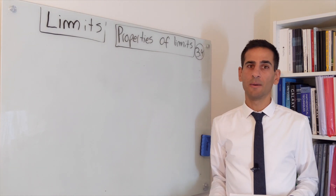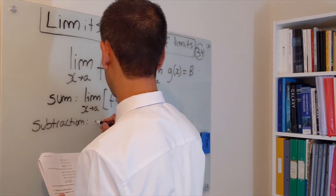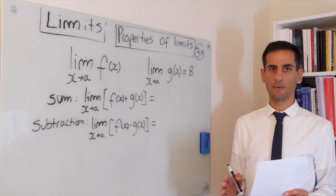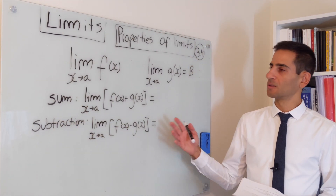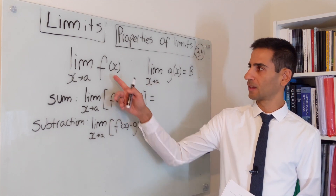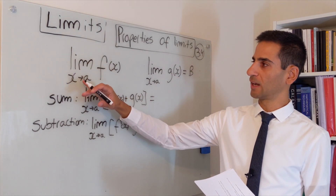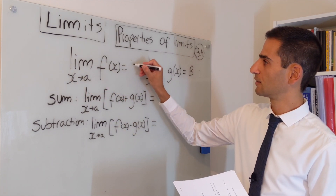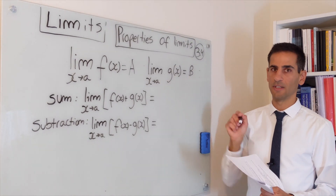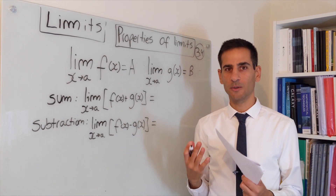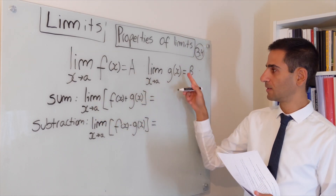You may already be using derivatives but didn't know their properties come from limits. Let's have a look. Let's start with two simple properties of limits: the sum and the subtraction properties. Just like in the lecture notes, we have a function f(x) and another one g(x), and we know that the limit as x goes to a of f(x) equals some value A, and the limit as x goes to a of g(x) equals B. Your best hopes are true: the limit of the sum is simply the sum of the limits.